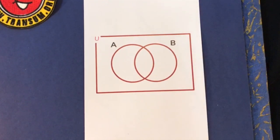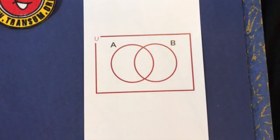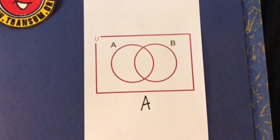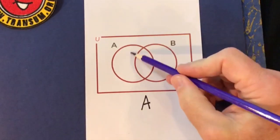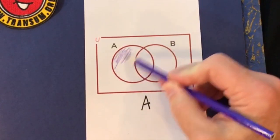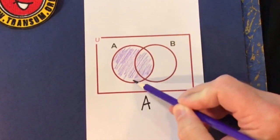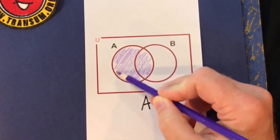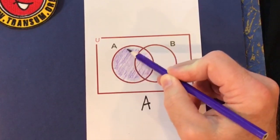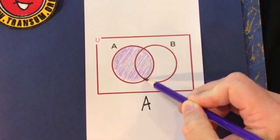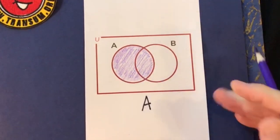The question might say colour in all of set A. So if we had to do that, we would colour in all of set A. My colouring isn't the best, but it doesn't have to be perfect — everybody can see that I have coloured in set A.